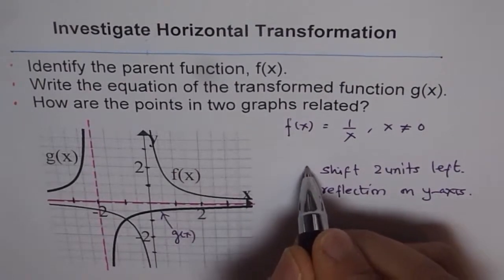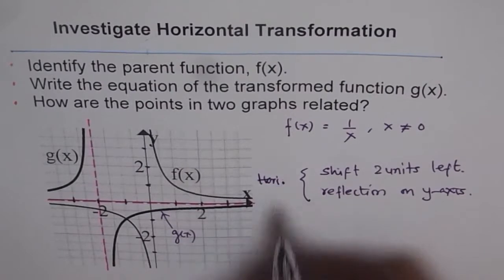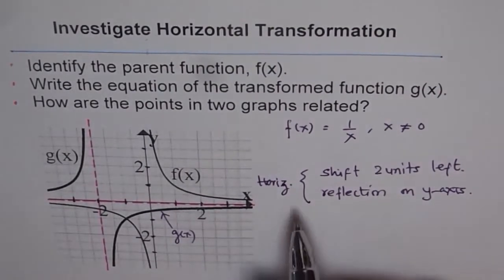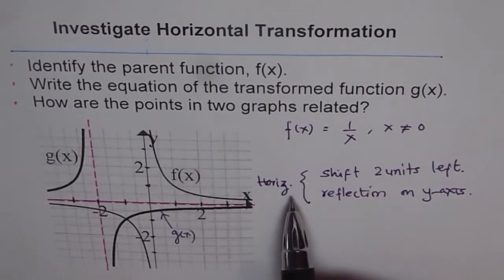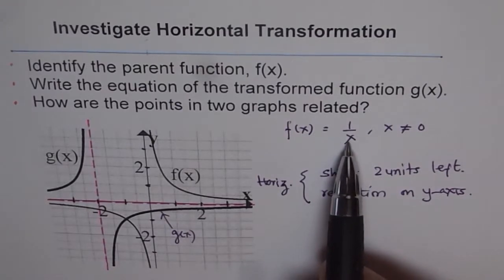Since both of them are horizontal, we know one thing: that the y coordinates will remain same, x will change, or we know that only the parent function inside will change. Outside is going to remain same since y is exactly the same.